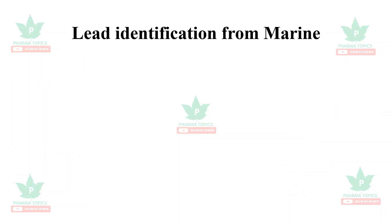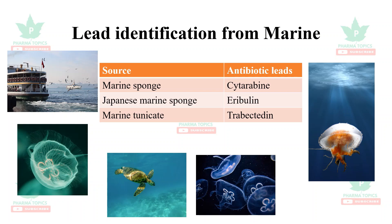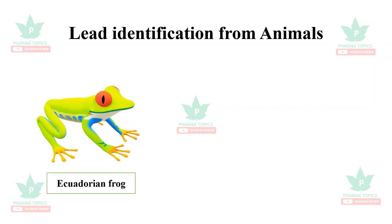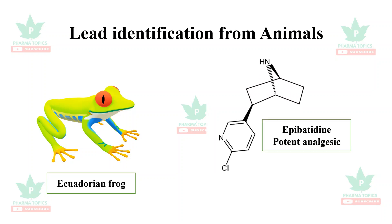Leads obtained from marine sources include cytarabine and eribulin, obtained from marine sponges, and trabectedin, obtained from marine tunicates. All these drugs are anti-cancer drugs. From animals, the Ecuadorian frog yielded epibatidine, which is a very potent analgesic drug.